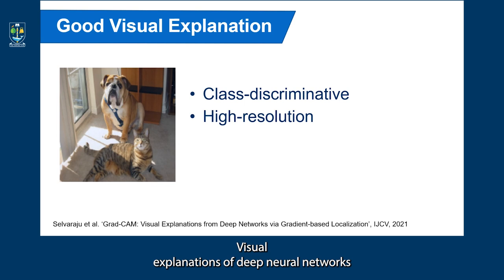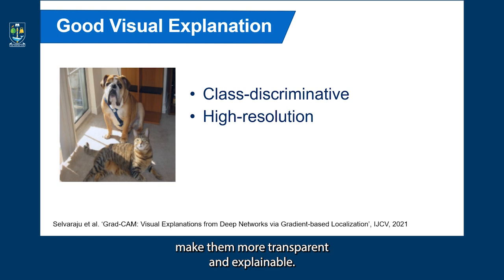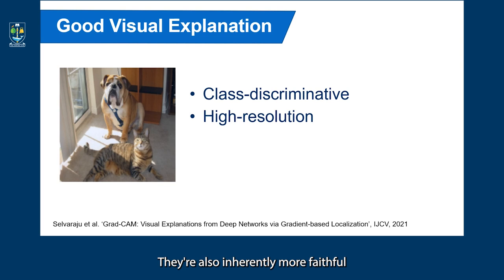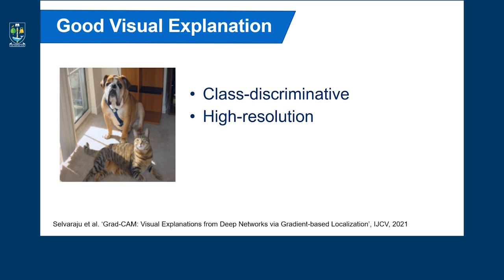Visual explanations of deep neural networks make them more transparent and explainable. Model-specific explanations can provide better insight into why a model fails. They can highlight how unexpected predictions have some reasonable explanations. They are also inherently more faithful to the underlying model, and they can identify dataset bias and help improve the generalization of the model.